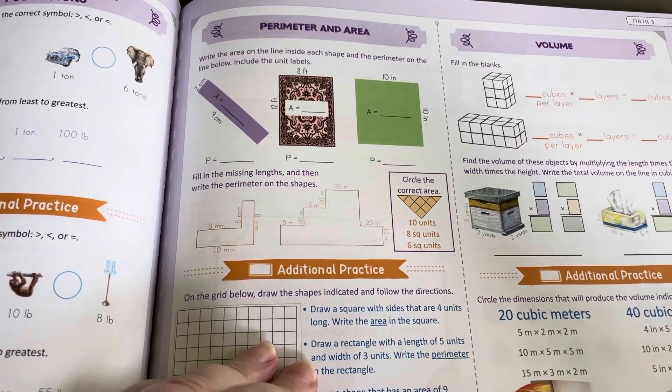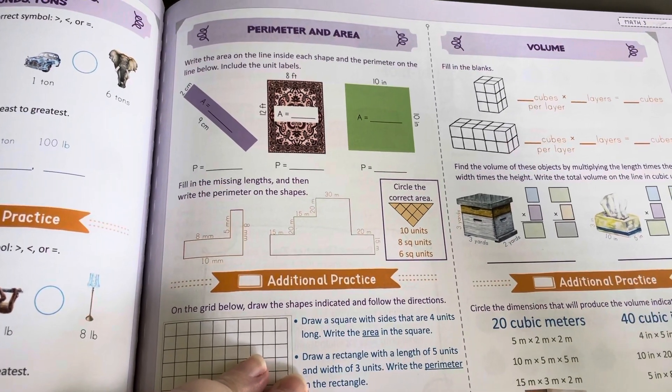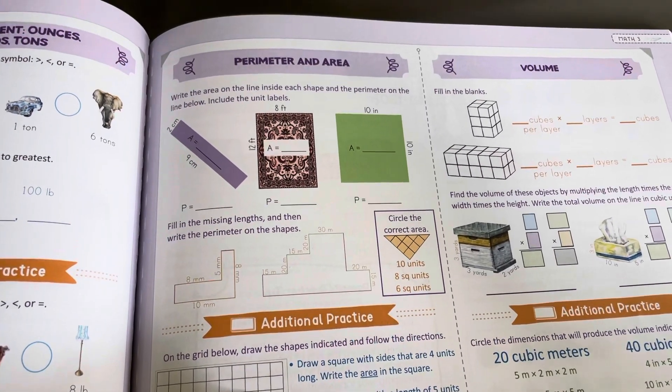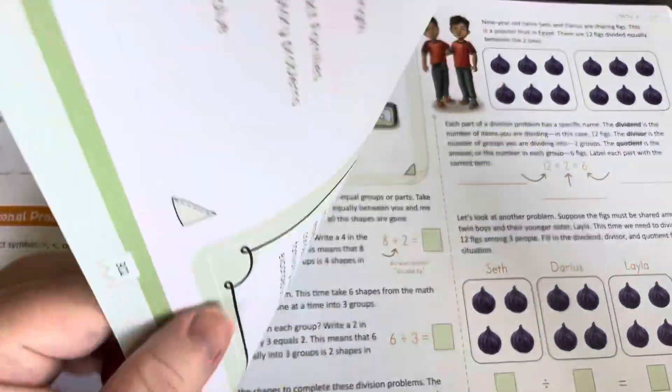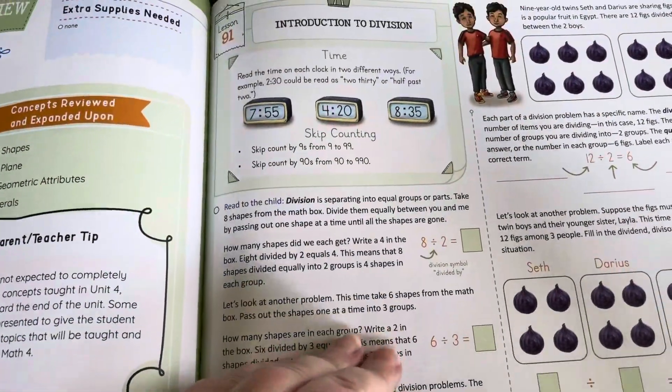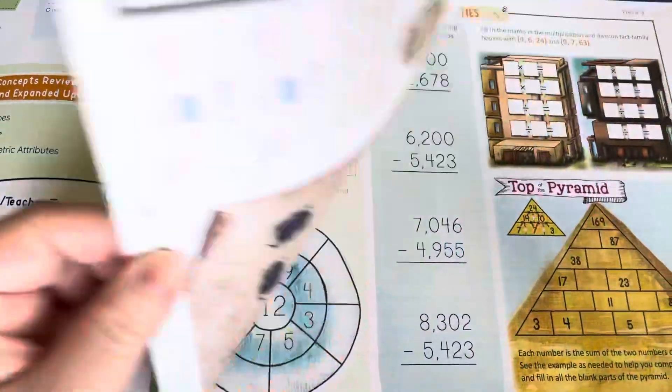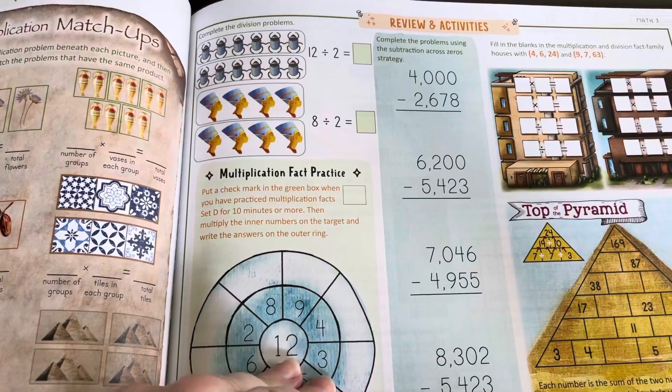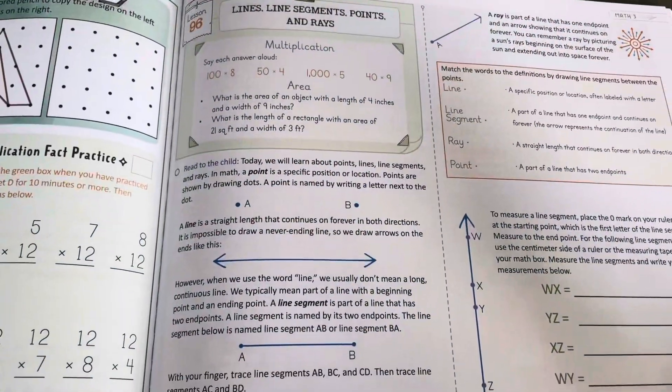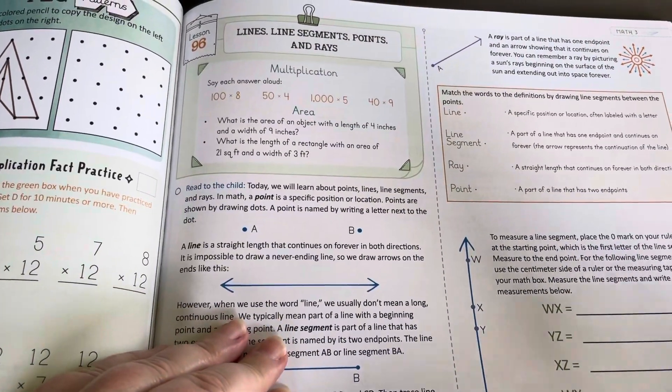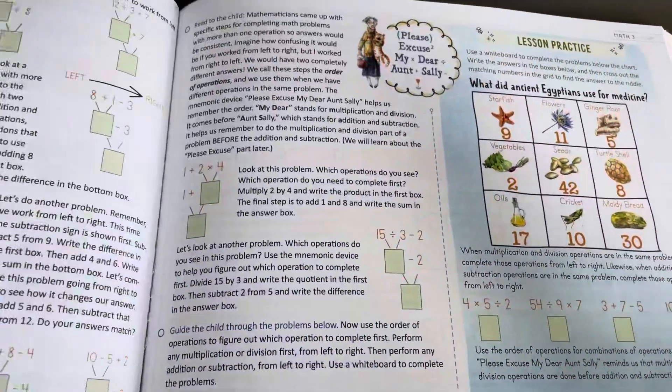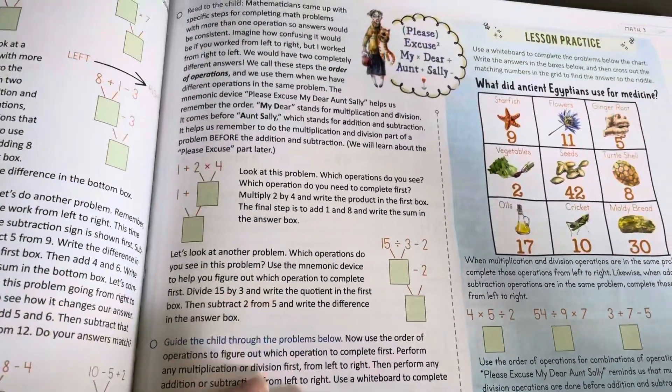Perimeter and area. We learned perimeter in math two. Volume. Here we go, unit four. So, we have intro to division. So, that's at the end of the year we're getting into division.